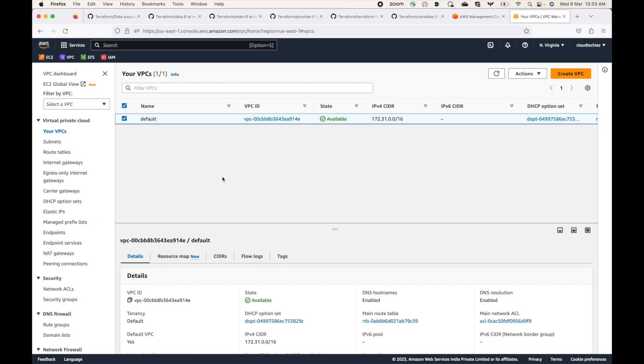Hello. In this session we will look at an example for the Terraform data source. In total we will see two examples — one in this session and another in the next session. For this particular example, we will be referring to a VPC that is already available in AWS. We'll fetch the information about the VPC and use that to create our resources using Terraform.